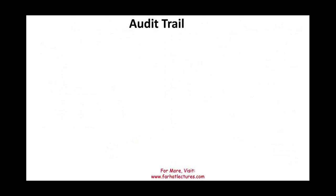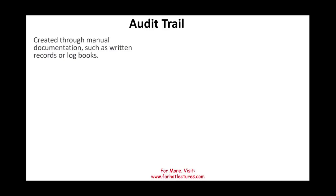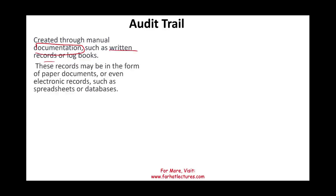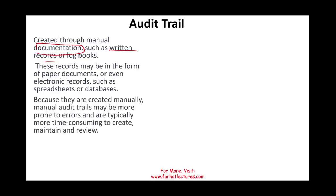Looking at the audit trail: in a manual system, the audit trail typically consists of manual documentation — actual paper, written records, or logbooks. These could also be in electronic form, such as an Excel sheet, but they are still manual because they aren't generated automatically. Because they are created manually, they are prone to errors and are typically more time-consuming to create, maintain, or review.